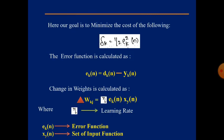If the error function is large, we need to reduce it. The error function is reduced by changing the weights. The change in weights is calculated by the formula: Δwkj = η · ek(n) · xj(n), where η is the learning rate and ek(n) is the error function.